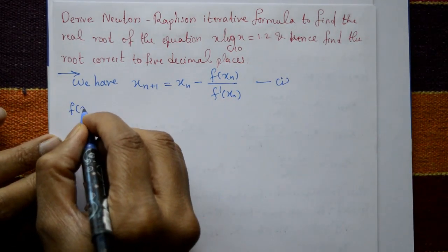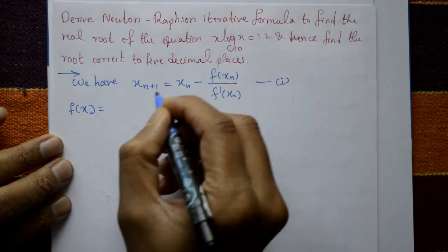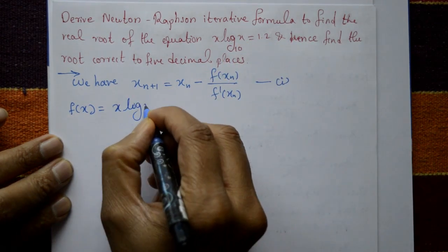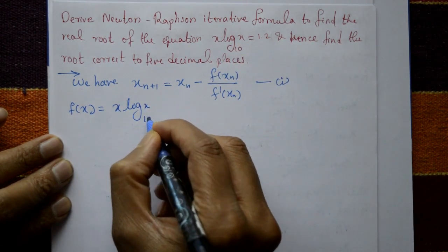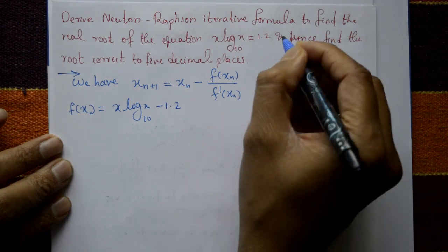Now f(x) is given. f(x) = x·log₁₀(x) minus 1.2. Take the left-hand side.